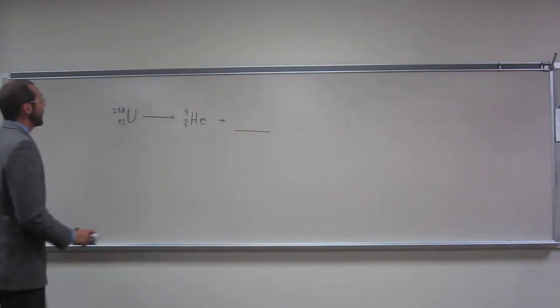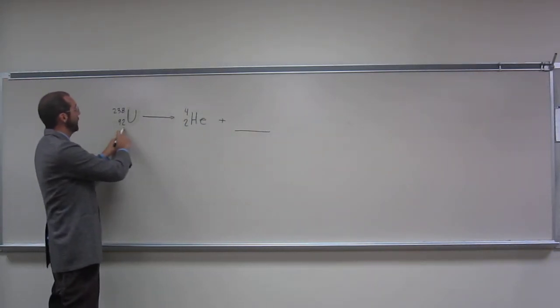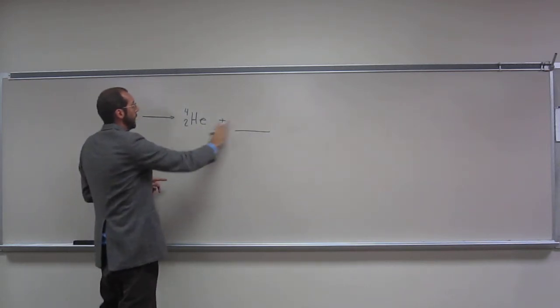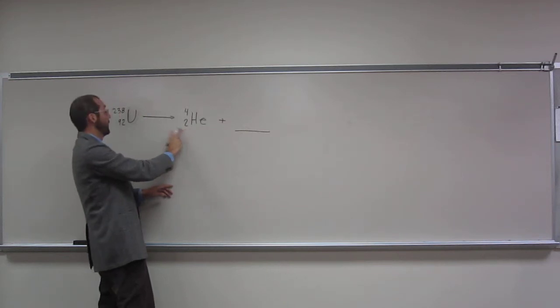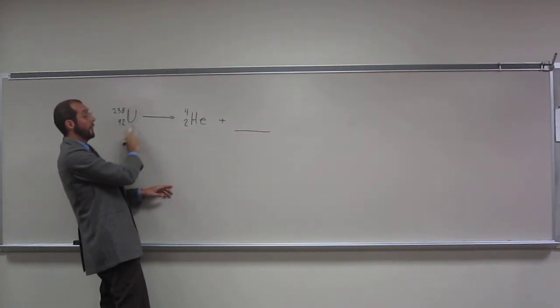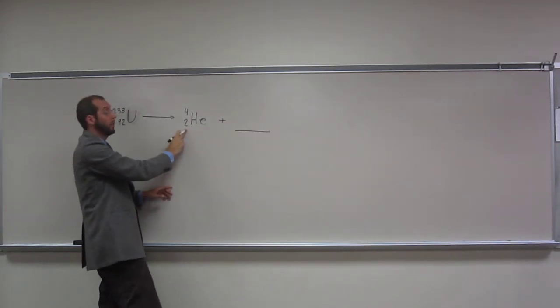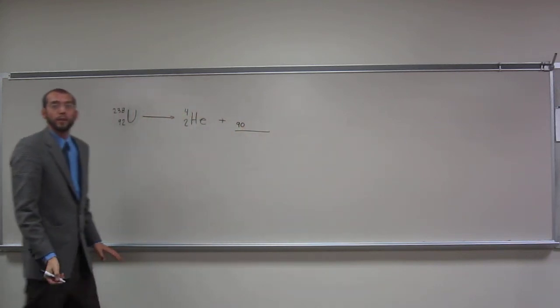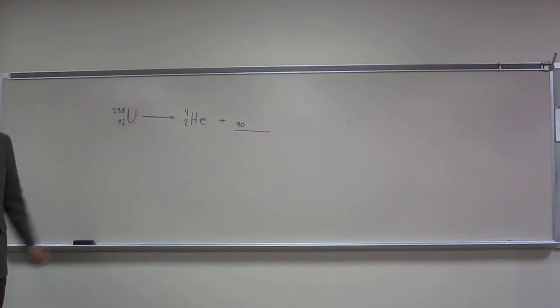So if we look here, what's happening? If we take this and go here, how many are we missing here? How many protons are we missing here? Ninety. Ninety, right. Since we're taking ninety-two and subtracting two, we're going to have ninety protons. Is everybody okay doing that type of problem?